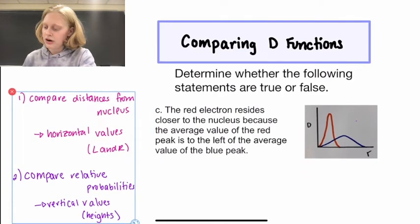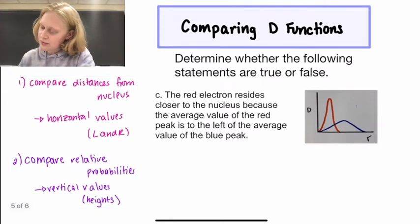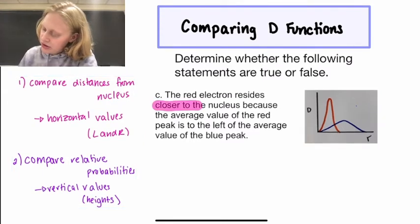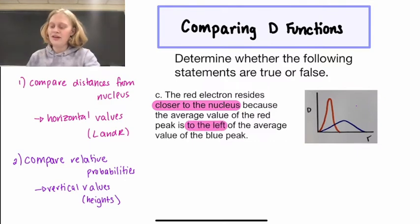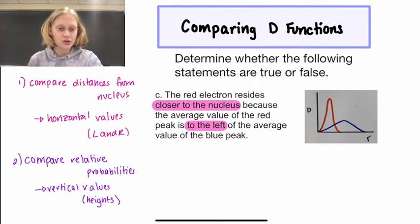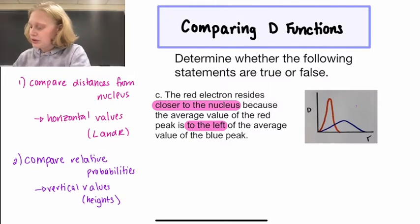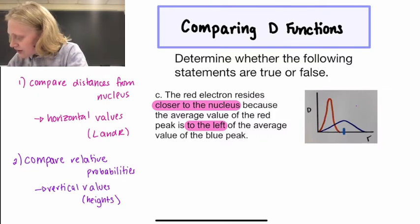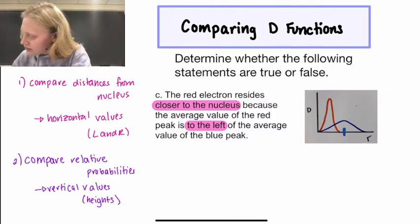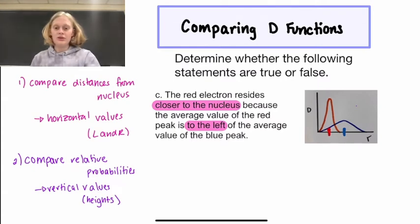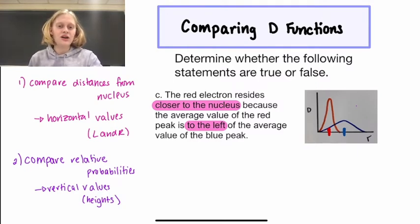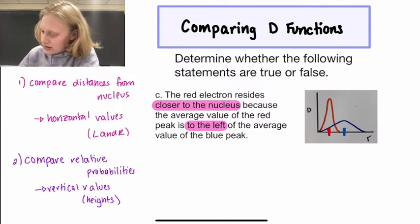Our third statement says the red electron resides closer to the nucleus because the average value of the red peak is to the left of the average value of the blue peak. This statement looks promising because they're using horizontal values to compare distances from the nucleus. The blue function has an average value right there, and our red function has an average value here. The red one has an average value that's to the left of the blue function, meaning it is on average closer to the nucleus. So this statement is true.